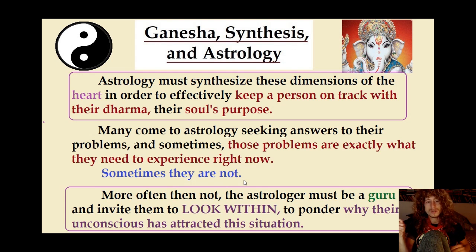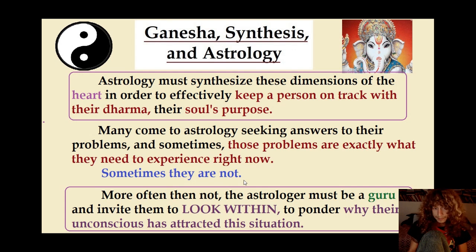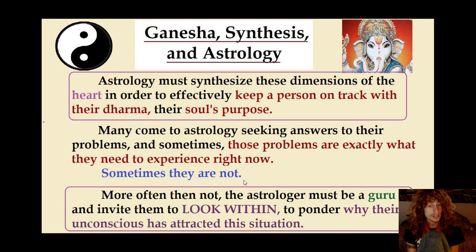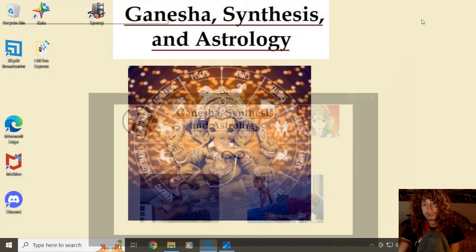Many come to astrology seeking answers to their problems. Many times those problems are exactly what they need to experience right now, although sometimes they're not — drugs, gambling, there's often examples where something happening in a person's life is just not serving them. An astrologer has to know how to discern between these two, and more often than not the astrologer just plays guru, invites the person to look within, to ponder why their unconscious has attracted this situation as a necessary karma. This is one of the gifts of Vedic astrology — to understand karma often as a necessary thing to go through, not necessarily something to escape. Western astrologers get this too, but it's nice that Indian astrology has the figure of Ganesha to ground this consciousness.